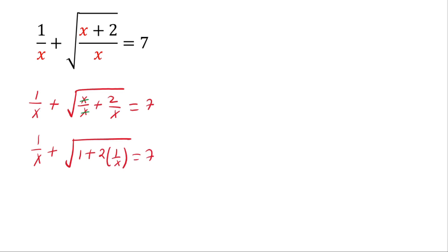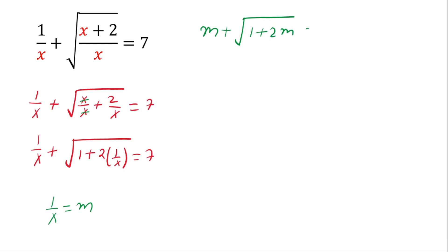Now if we substitute 1 over x equals m, then on the left hand side we have m plus square root of 1 plus 2 times m, and this equals 7.